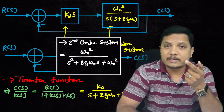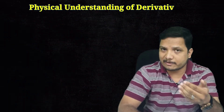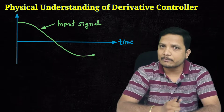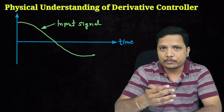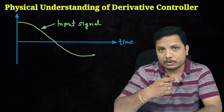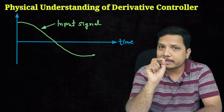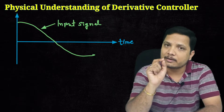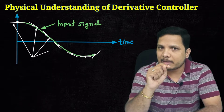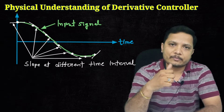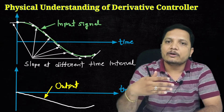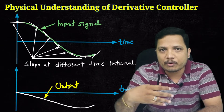Now let us understand the physical understanding of the derivative controller. Taking one input signal to the derivative controller, the output will always be the instantaneous slope of that signal. If I take a point and find whatever slope is there, that will be the output magnitude as per the differentiation rule. I have shown different slopes and plotted the corresponding output. That is what the derivative controller does — the output is always based on the slope of the input signal.